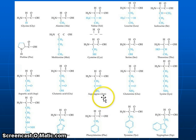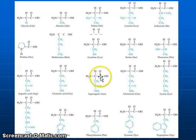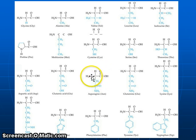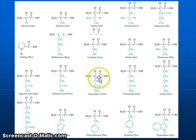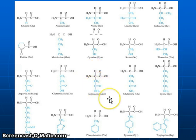Let's look at asparagine, ASN for short. We can see the central carbon is right here. Bonded to that we have the carboxyl group or the carboxylic acid, COOH. We have an amine group, NH2. We have a hydrogen. And this is an R group — a place where we have variation from one protein to another.